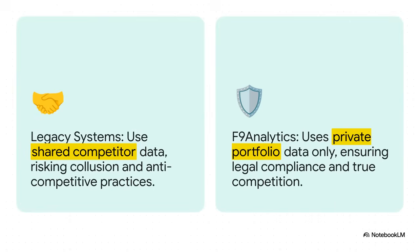And this chart just breaks it down perfectly. You've got two very different paths. The legacy systems pool data from so-called competitors to make pricing decisions, which, as we just saw, creates a huge risk of collusion. But the new way, the F9 Analytics way, takes a completely different road. It relies only on your own company's private portfolio data. This ensures you are truly competing, not just copying.